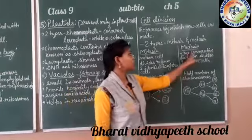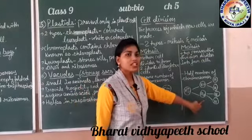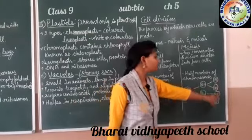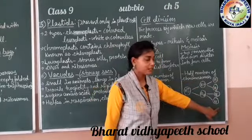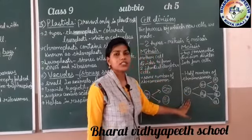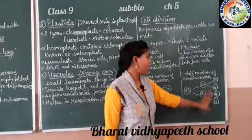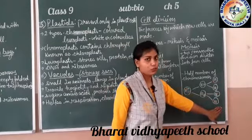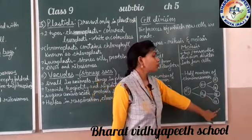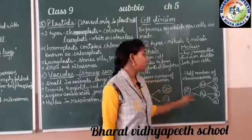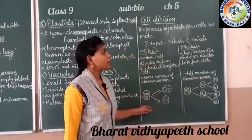In meiosis, there are two consecutive divisions. First, the main parent cell divides into two, then each of those divides again into two, so at the end four cells are formed. If the mother cell has four chromosomes, after the first division each cell has two chromosomes, and after the second division each has one chromosome. So the mother cell is converted into four daughter cells with decreasing chromosome numbers.